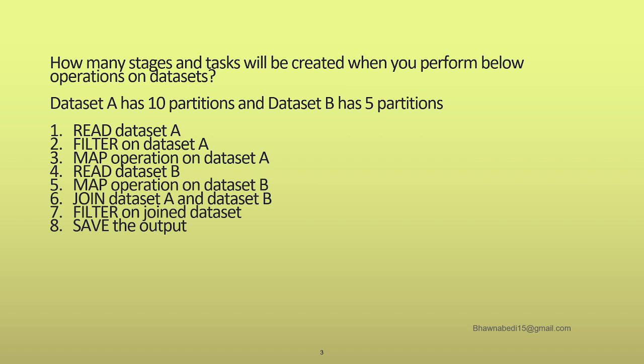When dataset A has 10 partitions and dataset B has 5 partitions: stage 1 covers reading dataset A, filtering dataset A, and the map operation on dataset A — these three go to one stage. Since dataset A has 10 partitions, the tasks created will be 10. Your tasks are generally equal to the number of partitions. For stage 2, dataset B has 5 partitions, so stage 2 — which involves reading dataset B and applying a map operation — will have 5 tasks within it.